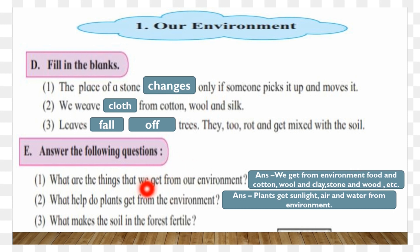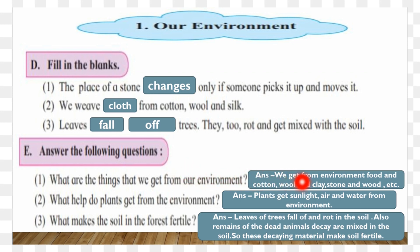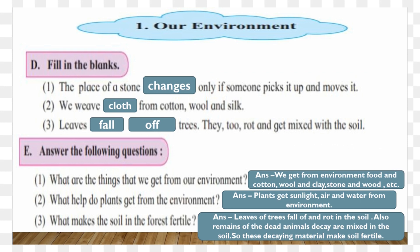What makes the soil in the forest fertile? Answer: leaves of trees fall off and rot in the soil. Also, the remains of dead animals decay and get mixed in the soil. This decaying material - dead animal remains and fallen leaves - makes the soil fertile.